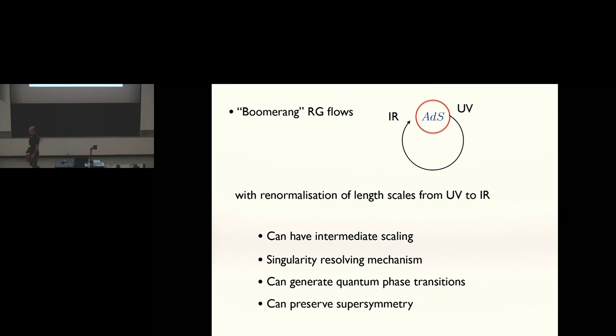People are used to RG flows where you start off with a CFT in the UV, and you flow to a different conformal field theory in the IR. That's not happening here, and the reason is that we're breaking translations explicitly. When you break translations explicitly, effectively at long wavelengths, that deformation becomes an irrelevant deformation. So that's not unitary? No, it's unitary.